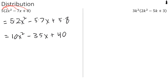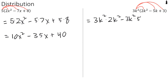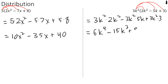We're going to do the same thing in this second example. We will take the 3k squared, which is a multiplication term, and we're going to multiply it times the 2k squared, times the 5k, and times the 3. So we'll write out what we intend to do: 3k squared times 2k squared, then 3k squared times 5k, then 3k squared times 3. 3k squared times 2k squared is 6k to the 4th, then 3k squared times 5k is 15k to the 3rd, and then 3k squared times 3 is plus 9k squared.